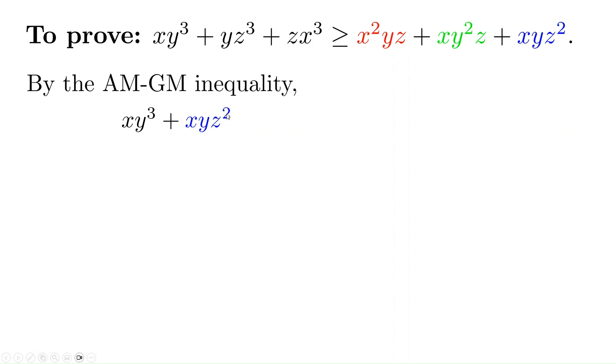xy³ is actually the first term on the left side. xyz² is a term on the right side, colored blue. The sum of these two terms is ≥ 2 times the square root of their product, the so-called AM-GM inequality.